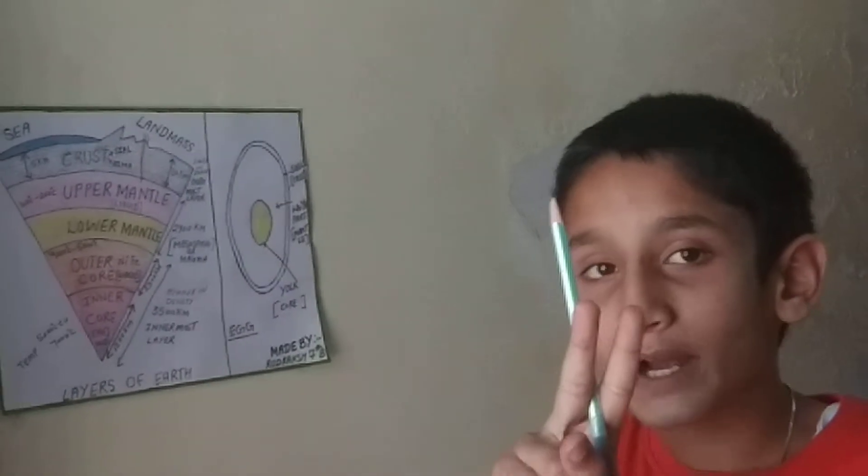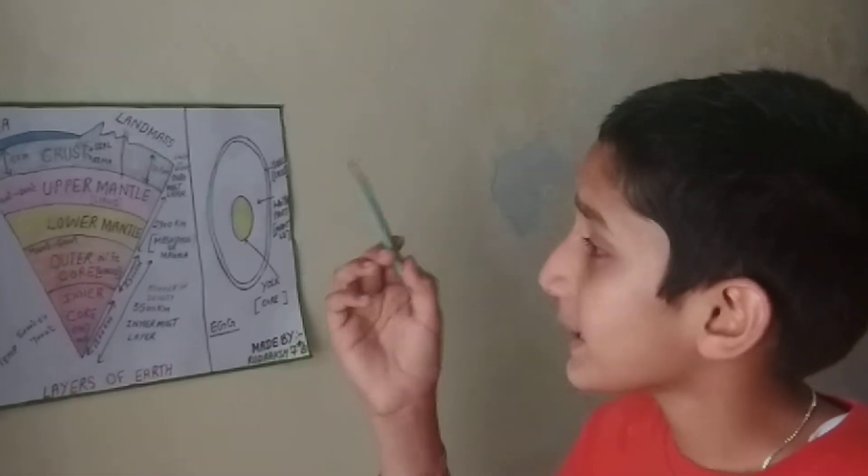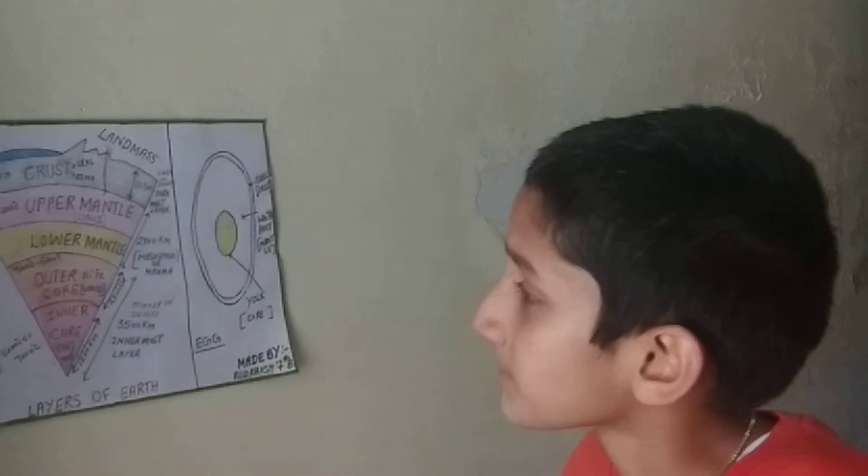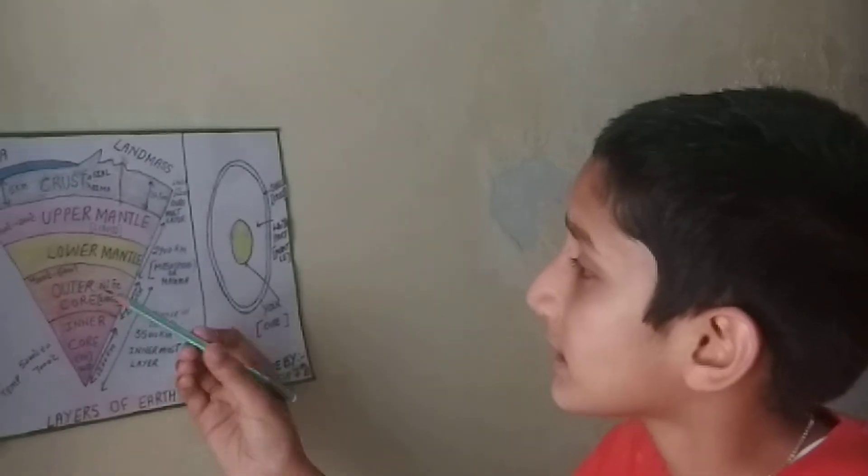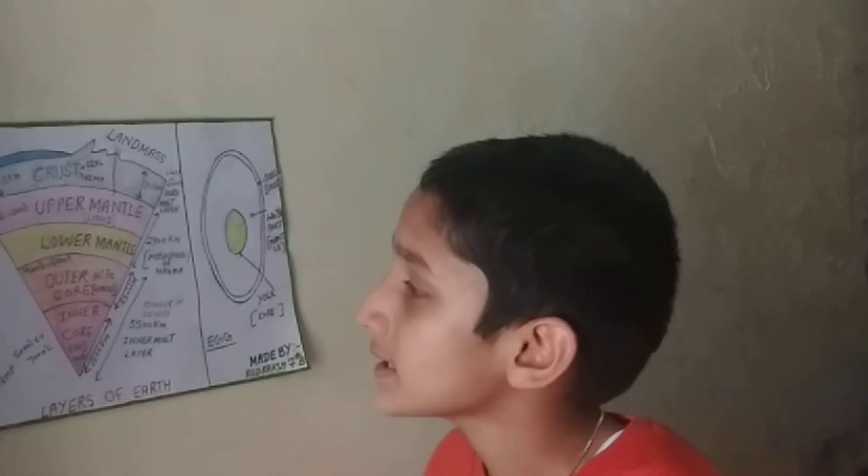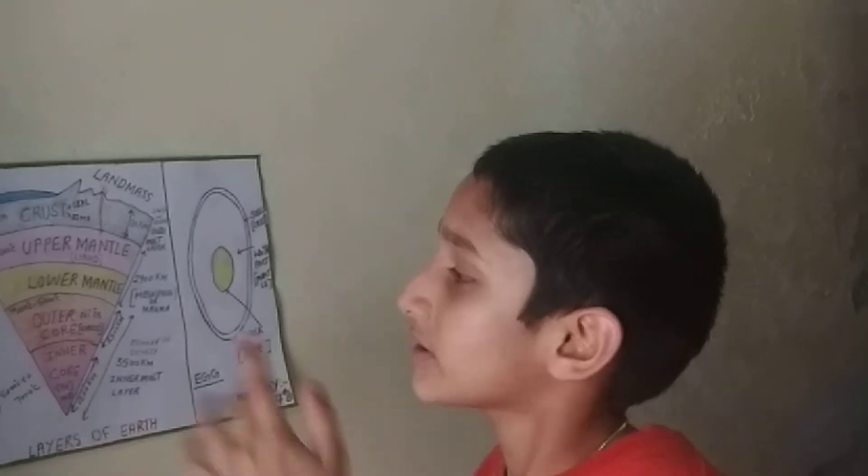There are two parts of the core. The first part is the outer core, which is made by the mixture of nickel and ferrous. It is liquid in form. The temperature of the outer core is 4000 to 5000 degrees Celsius, and the distance of the outer core is 2300 km.